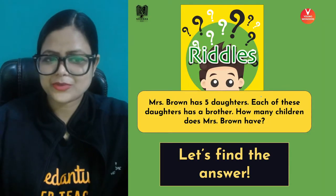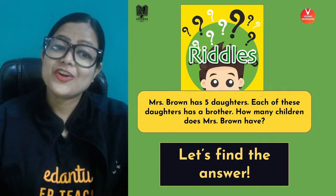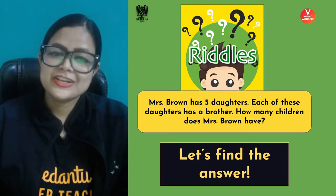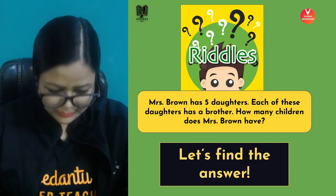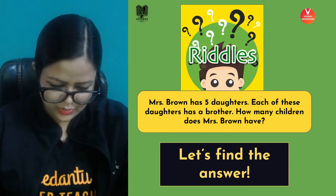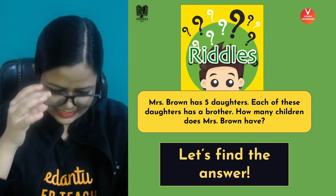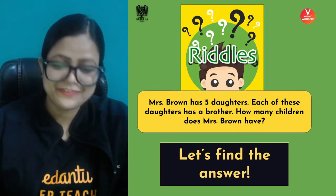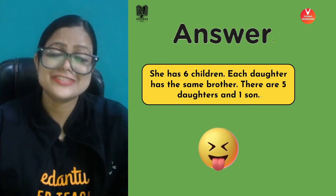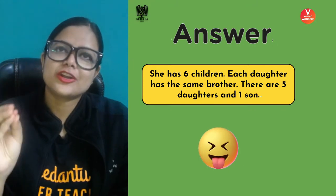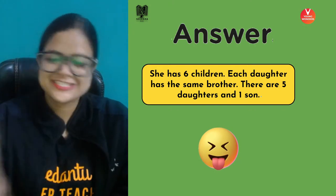Now, the answer to the riddle: Mrs. Brown has five daughters and each of these daughters has a brother. So how many children does Mrs. Brown have? The answer is six — five daughters and one son. Each daughter shares the same one brother. That is the right answer.